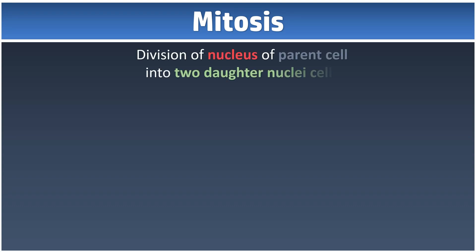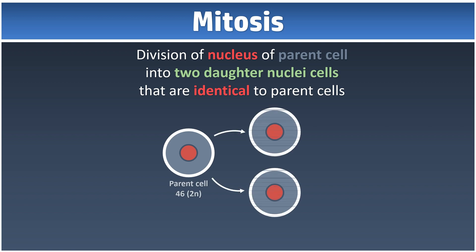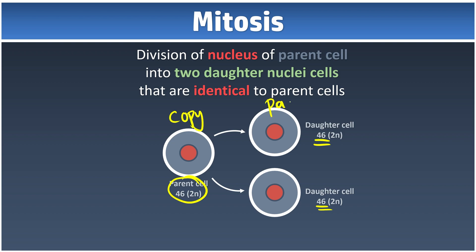We have learned in the last video that mitosis is a cell division where the parent cell divides into two identical daughter cells. For example, if a parent cell has 46 chromosomes, whenever it undergoes mitosis, it divides into two identical daughter cells where each daughter cell has the same number of chromosomes as the parent cell. It's essentially just a copy-and-paste process — a cloning process.